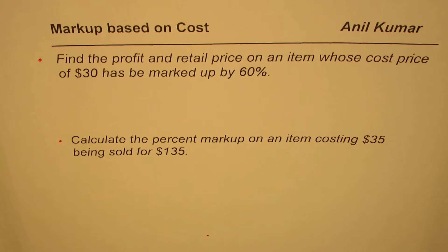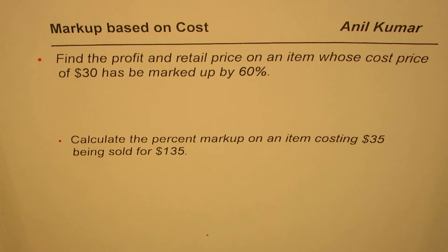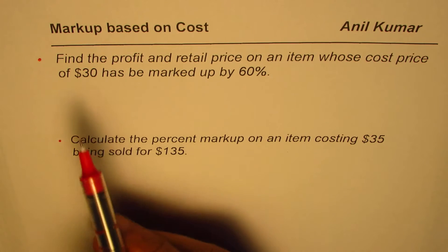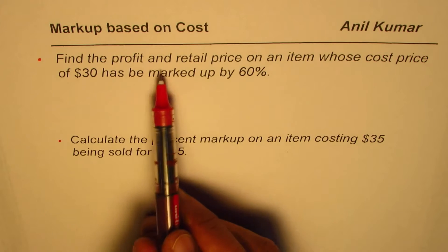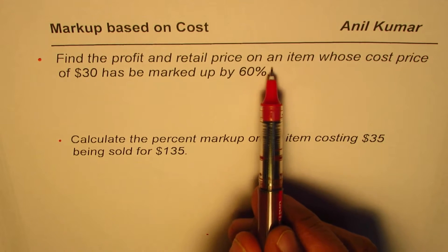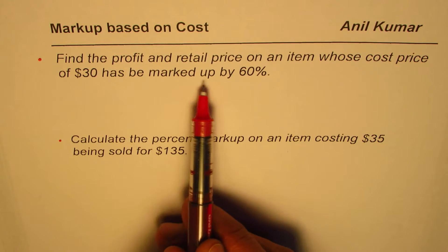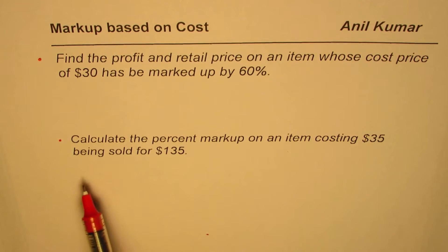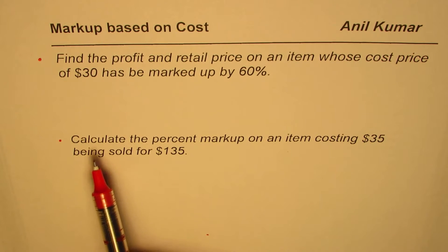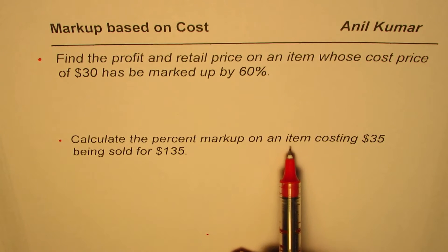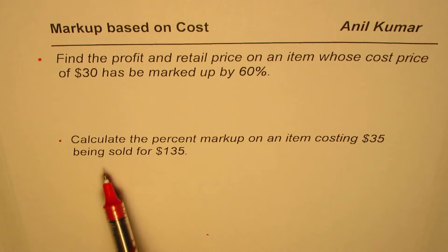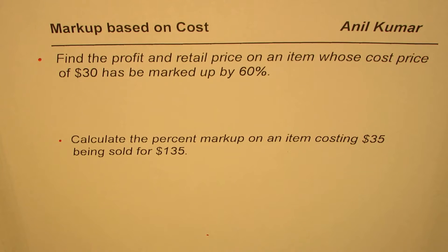I'm Anil Kumar. Here we have two related questions on profit and retail price. The first question is: find the profit and retail price of an item whose cost price of $30 has been marked up by 60%. Part 2 is: calculate the percent markup on an item costing $35 being sold for $135.